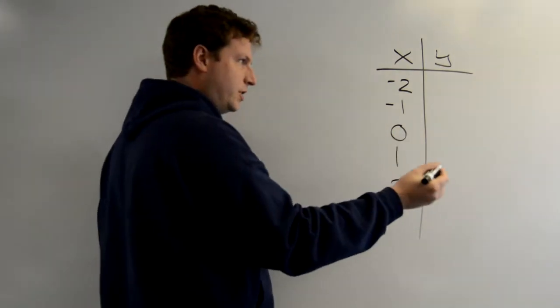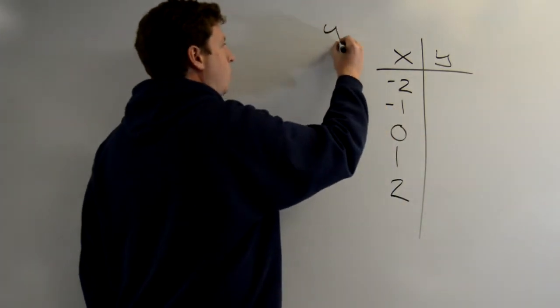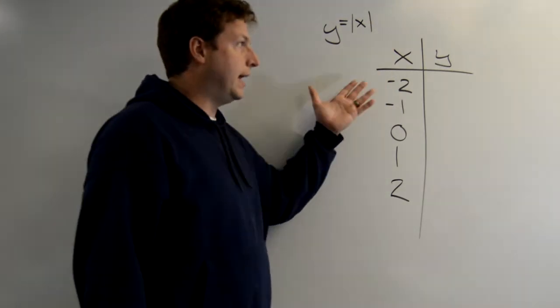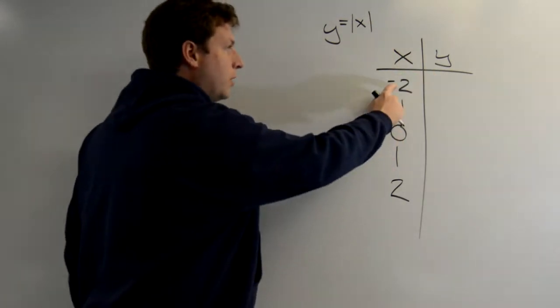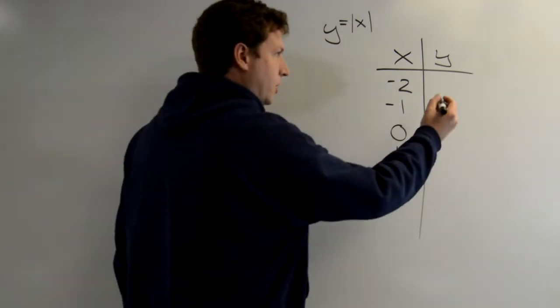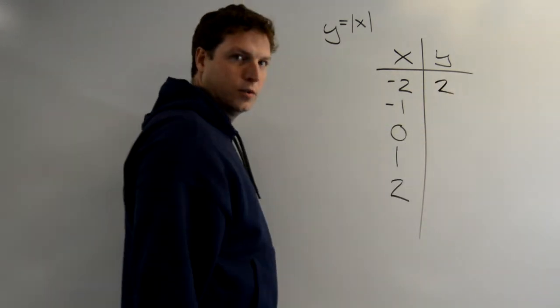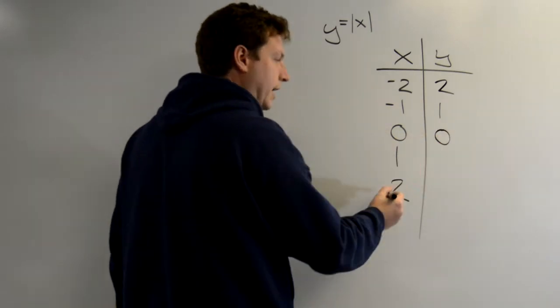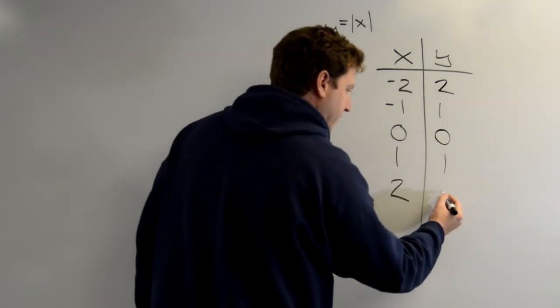So let's just say our equation is y equals the absolute value of x. How do I get from x to y? Well, what's the absolute value of negative 2? Positive 2. What's the absolute value of negative 1? 1. 0, 0. 1, 1. Absolute value of 2 is 2.